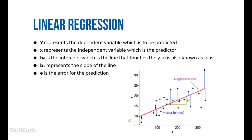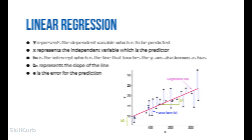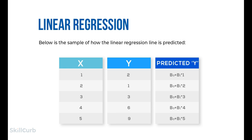Once we find the best b0 and b1 values, we get the best fit line. When using our model for prediction, it predicts the value of y for the input value of x. By achieving the best fit regression line, the model aims to predict y such that the error difference between predicted and true values is minimized. It is very important to update b0 and b1 values to reach the best values that minimize the error between predicted y and true y.